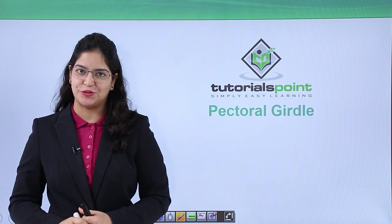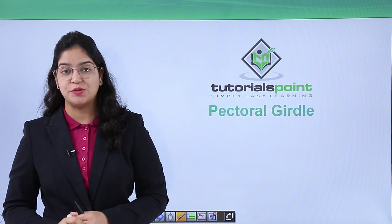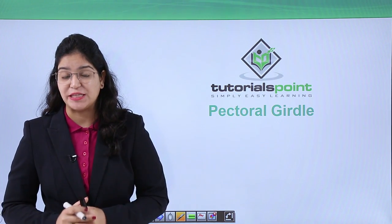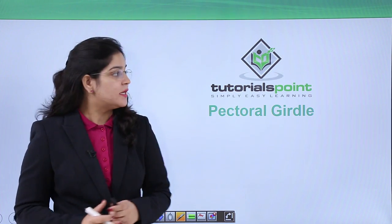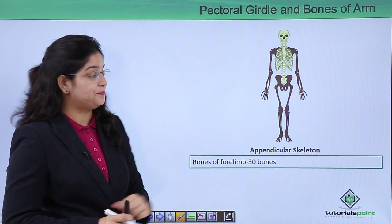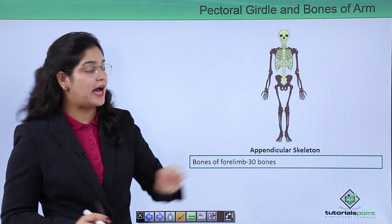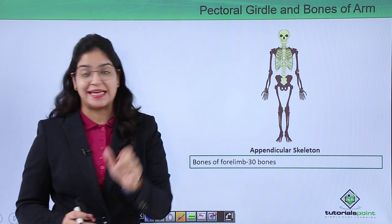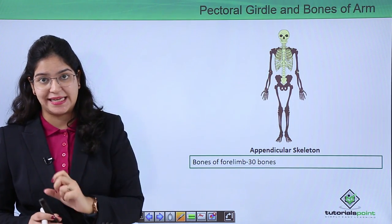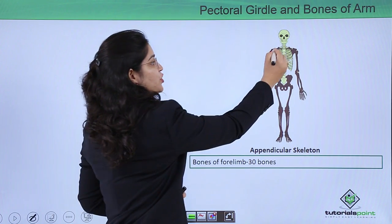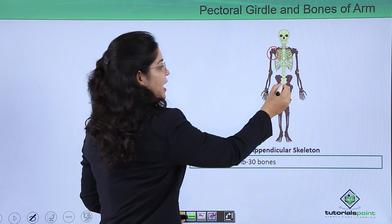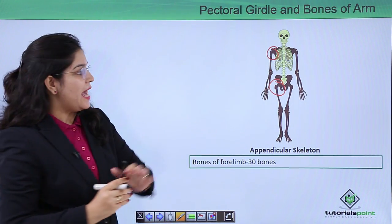Welcome back to Tutorials Point. Today we are going to learn about the pectoral girdle. Girdles are the attachments which connect our appendicular skeletal system to the axial skeleton. The brown-colored limbs are called the appendicular skeletal system and the one in yellow is called the axial skeleton. The parts which connect the appendicular skeletal system to the axial skeleton are called girdles.